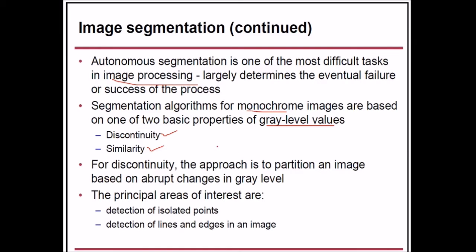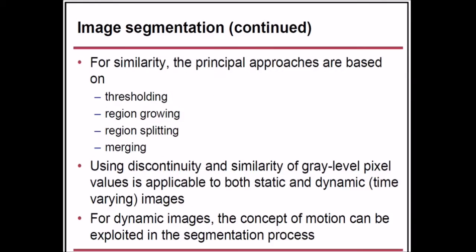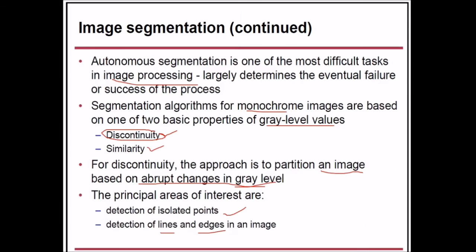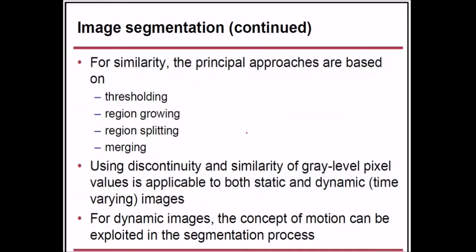For discontinuity, the approach is to partition an image based on abrupt changes in gray level. The principal areas of interest are the detection of isolated points and detection of lines and edges in the image. For similarity, the principal approaches are based on thresholding, region growing, and region splitting and merging.